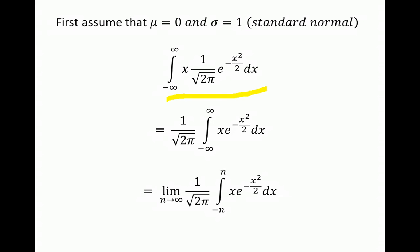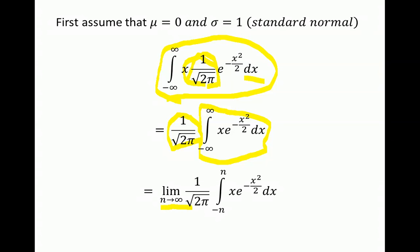Computing this integral: the constant factor in front does not depend on x, so we can take it outside the integral as a multiplier. Since the integral is from negative infinity to infinity, we take the limit from negative n to n as n goes to infinity.